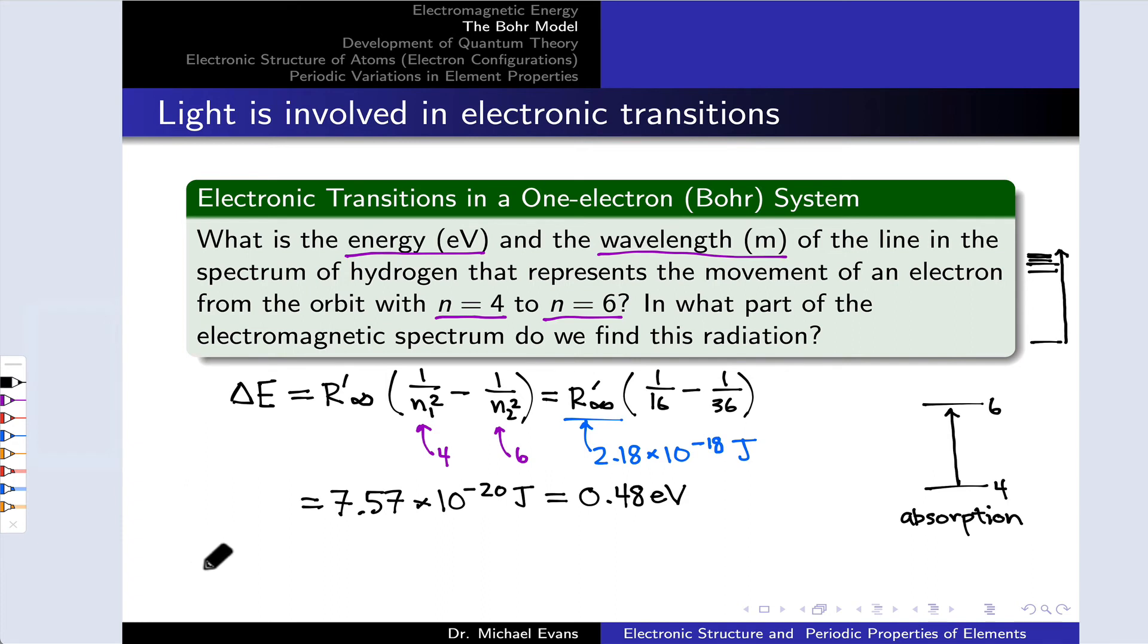To calculate the wavelength, we need to recall that wavelength equals Planck's constant times the speed of light divided by the energy, which in this case is the change in energy from the lower to the higher energy level. When we plug in values for Planck's constant and the speed of light, and the energy in joules is probably the most convenient unit to use, we arrive at a wavelength of 2.63 times 10 to the negative 6th meters.